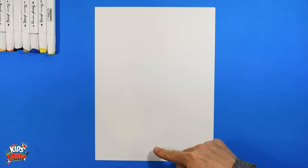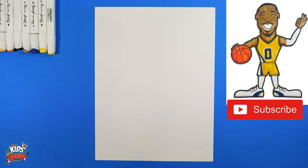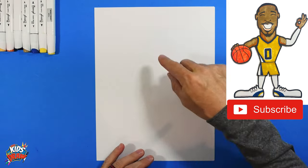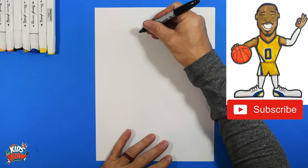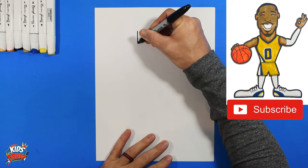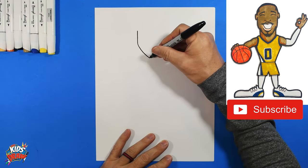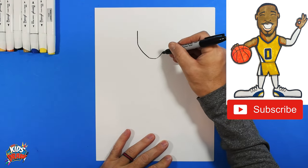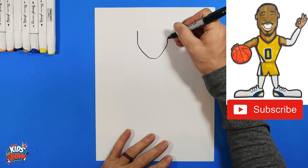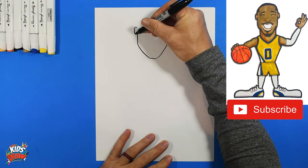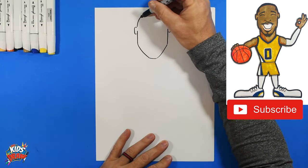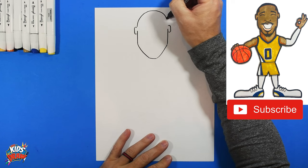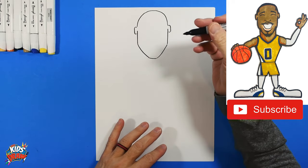Let's do Tyrese Halliburton. Find the center of your page up and down, and across, and we will draw him right here in the middle. Get your black Sharpie and start up here with a long jaw down to a chin, flatten out that chin, angle up and straight up. Add a couple of ears — sideways ovals on the side — and a round head going up to connect.